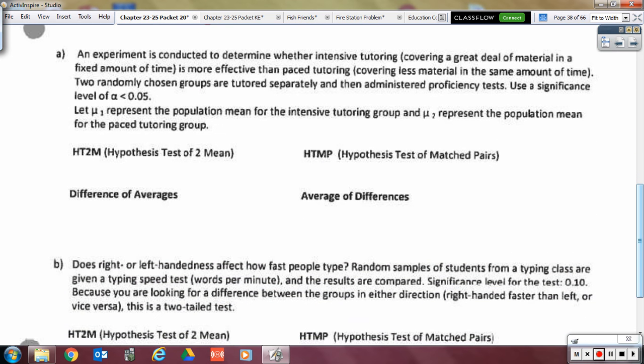All right. So, let's look at this first one. Here we go. An experiment is conducted to determine whether intensive tutoring, which is covering a great deal of material in a fixed amount of time, is more effective than paced tutoring, which is covering less material in that same amount of time. Two randomly chosen groups are tutored separately and then administered proficiency tests, use a significance level of alpha as less than 0.05, and so on. And so, what kind of design does this lead you to believe we're dealing with here? Two means or paired data? I agree. Two separate groups. In fact, in the next sentence, which I didn't read, it says, let mu of one represent the population mean for this group and mu of two. So, it is two separate means, which means we will have the difference of two separate averages. So, this one was a hypothesis test for two means and the difference of those two averages.